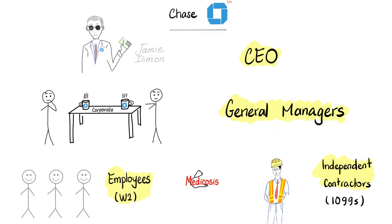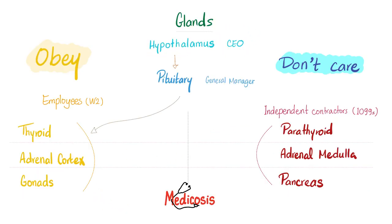When it comes to the endocrine system, you have the CEO, general manager, followed by employees, and independent contractors. Only the employees listen to the manager. The CEO is the hypothalamus. The manager is the pituitary. The employees are the thyroid, adrenal cortex, and gonads. So the gonads are employees, which means they respond to the pituitary. The two stimuli are FSH and LH, secreted by the anterior pituitary.